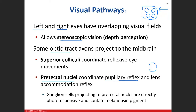The superior colliculi and the pre-tectal nuclei are found along our visual pathway. As the optic tract projects back toward the thalamus, it sends some axons to the superior colliculi and some to the pre-tectal nuclei for the pupillary reflex. For the pupillary reflex: the sensory portion is the optic nerve, but the motor portion is the oculomotor nerve, which controls the sphincter pupillae muscle in the iris, causing constriction.